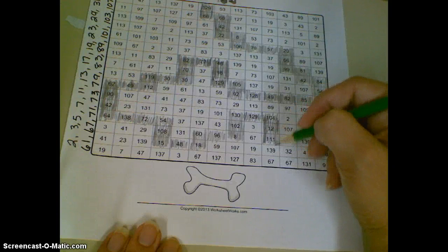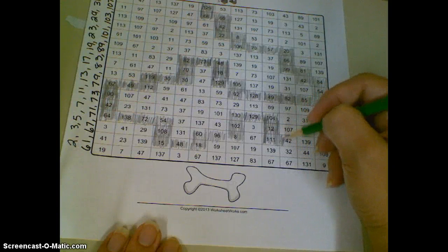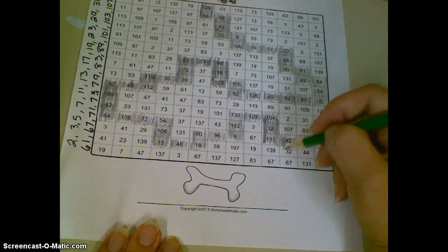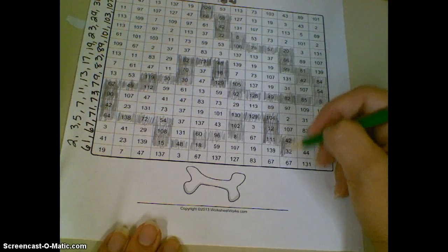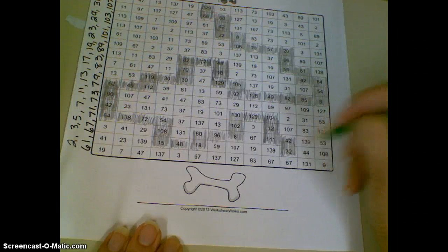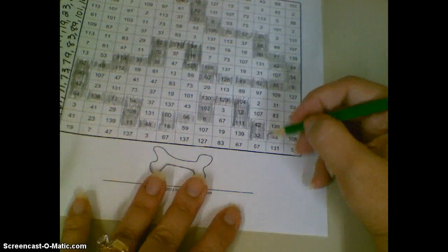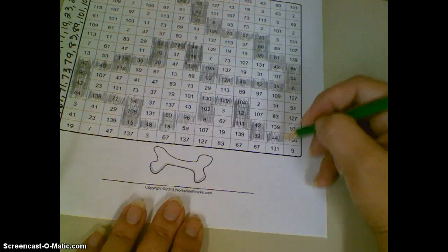And then we're going to move over to 42. That's composite. And then that's 6 times 7. 8 times 4 is 32. And then we've got 44 over here. 11 times 4 is 44.